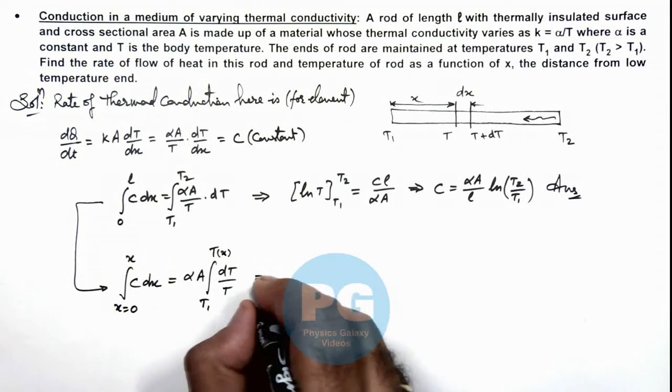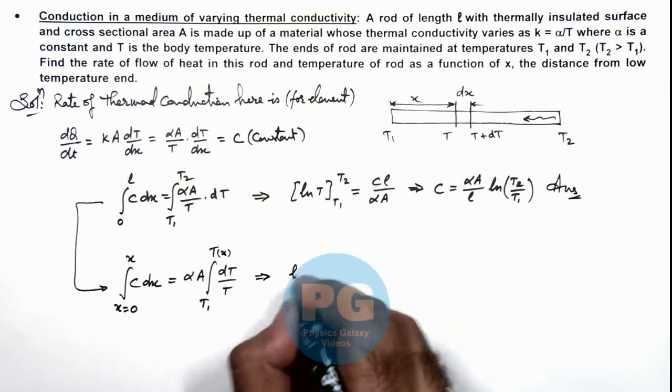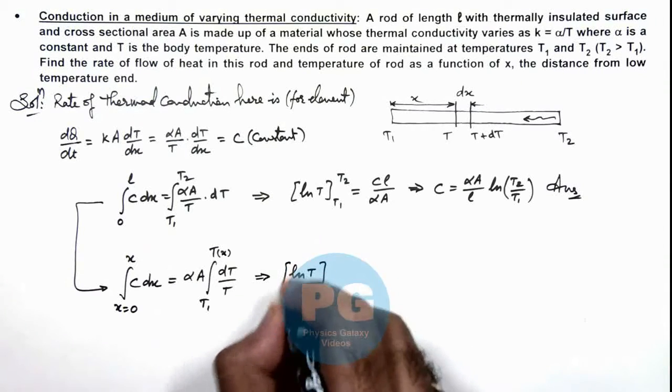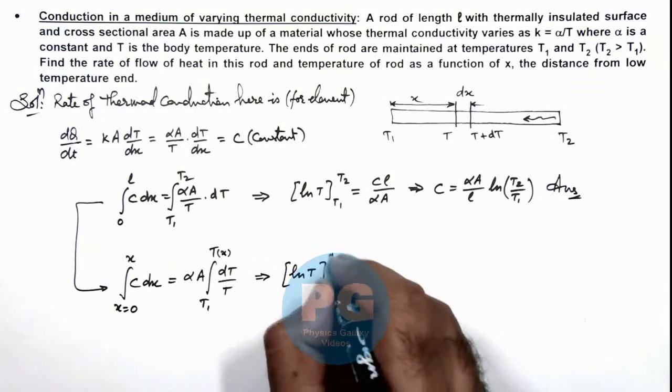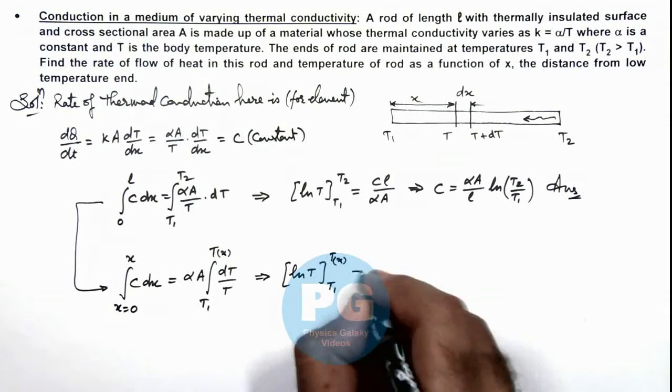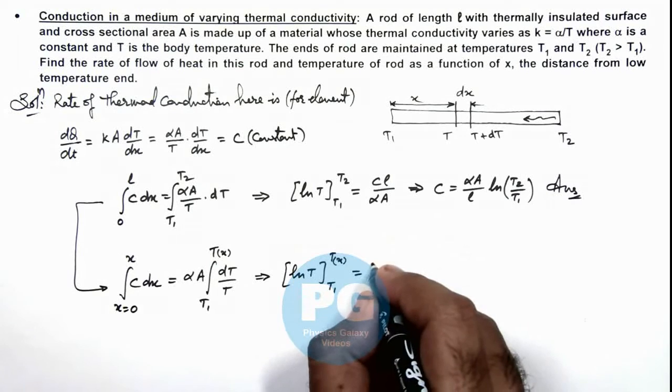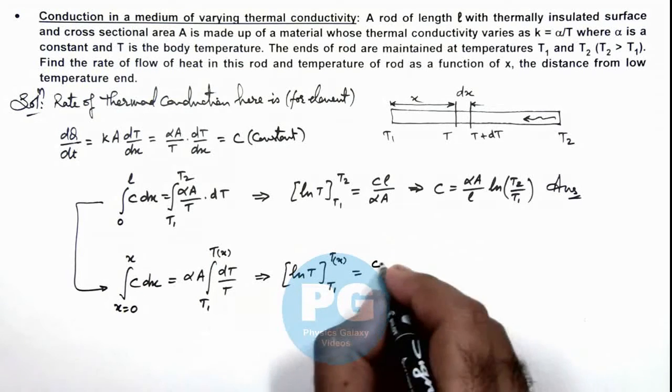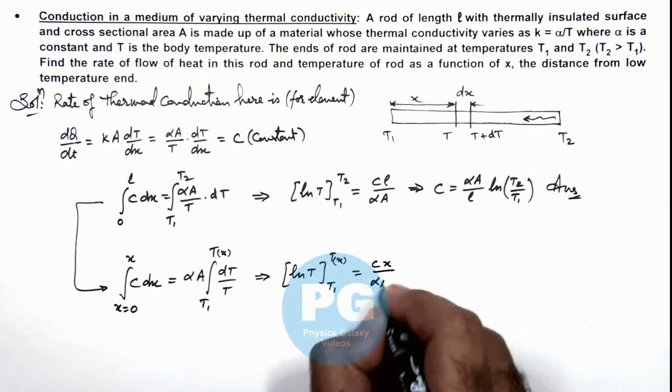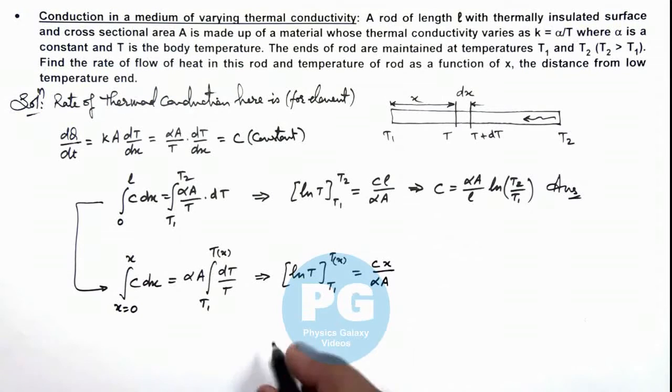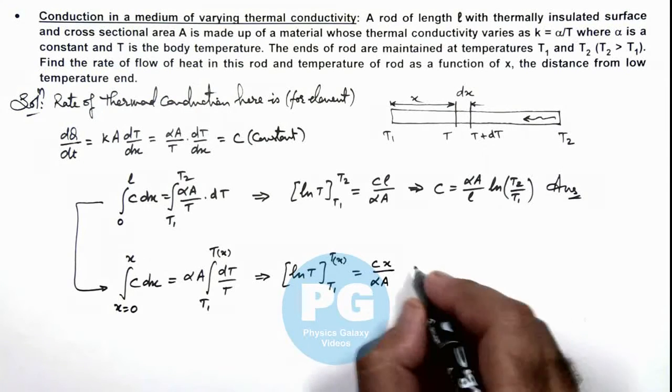Then on integrating this, it is giving us ln T within limits from T1 to Tx is equal to again we are getting it as c, and this will be x upon αA. And further if we substitute the limits this will give us